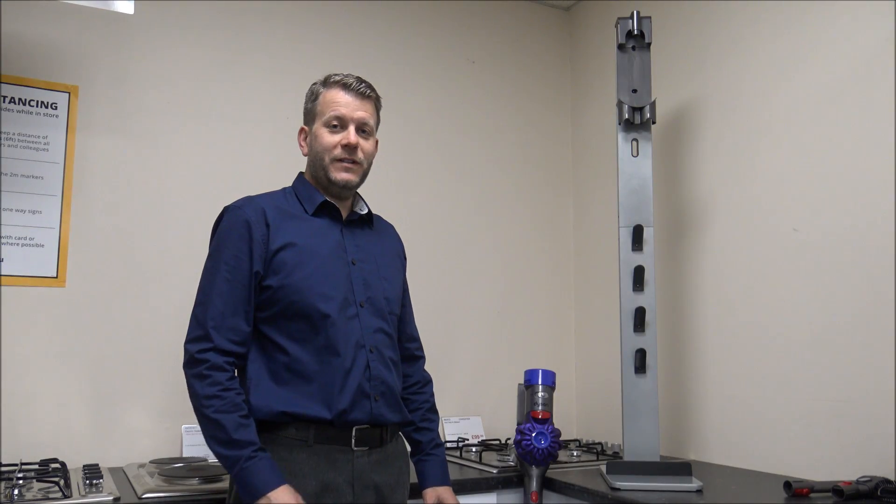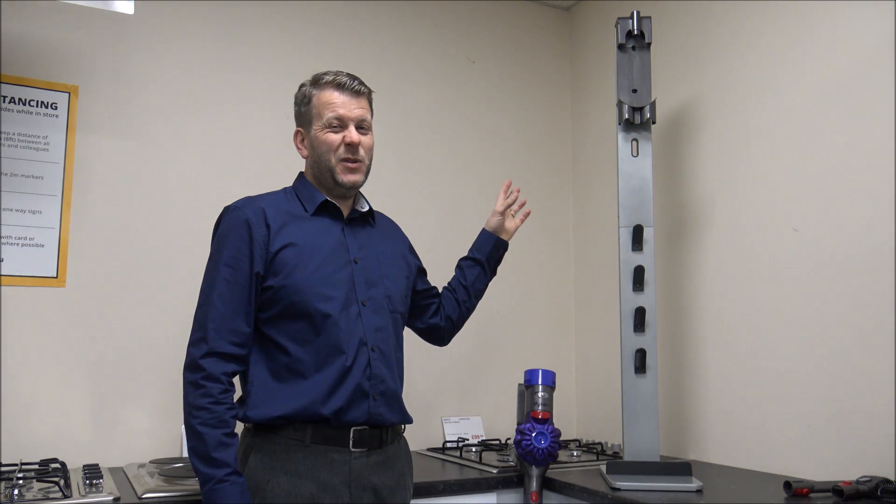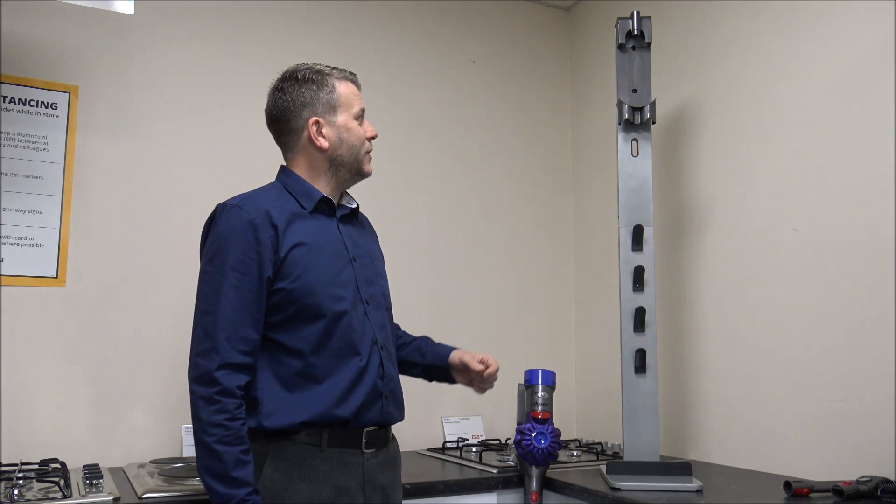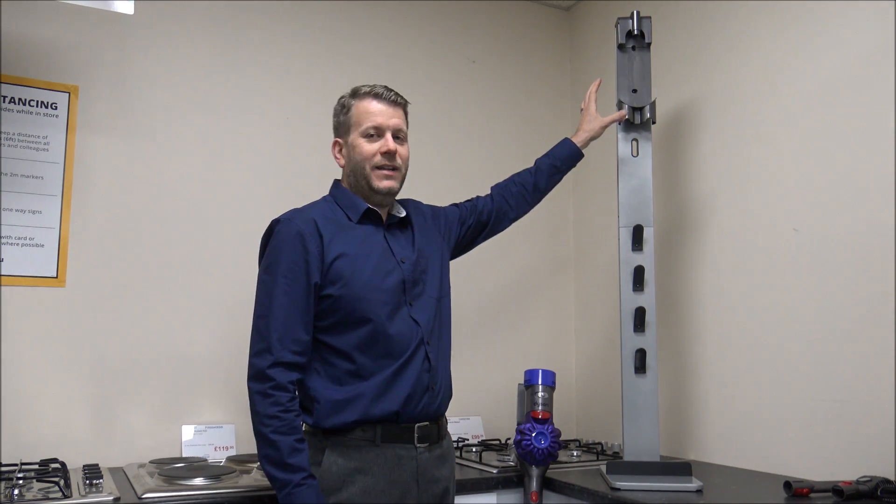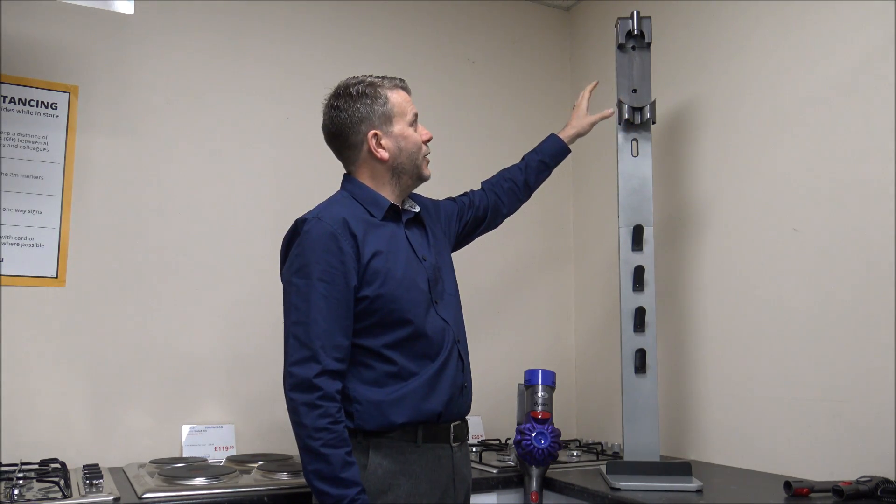So what I've done is I've got it all built up now and I'm using a Dyson V7 as an example because Dyson is one of the more popular brands of cordless vacuums. What I've done is I've actually used the bracket because it doesn't come with a bracket - you do need to use the manufacturer's bracket.